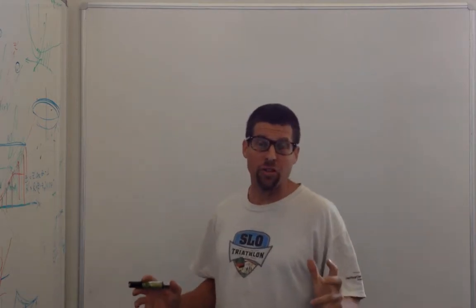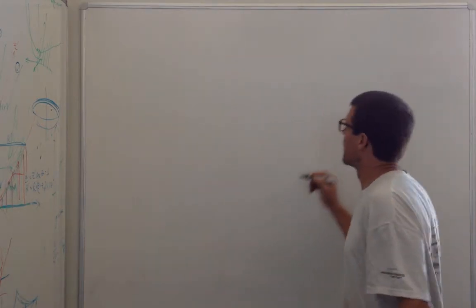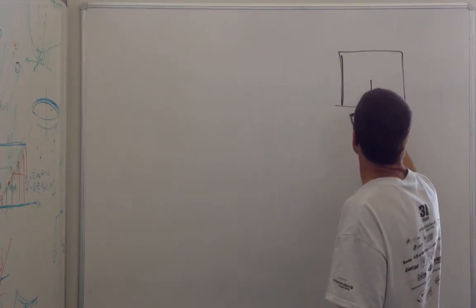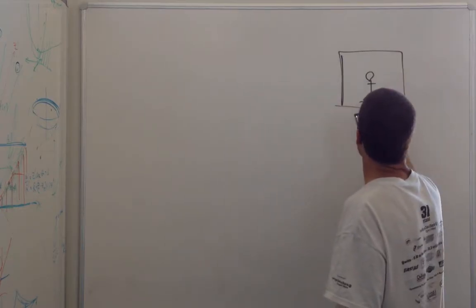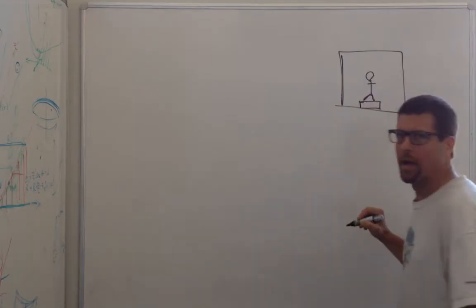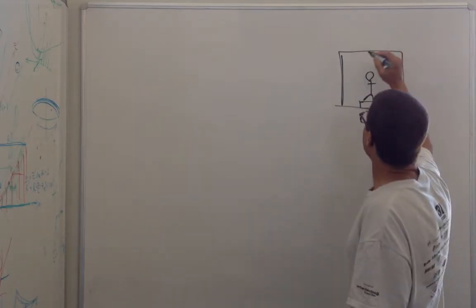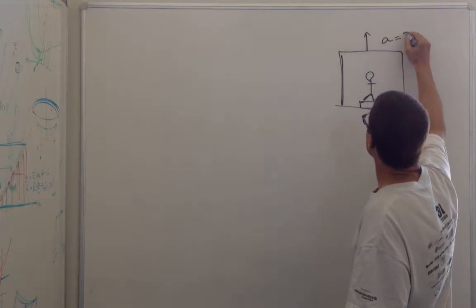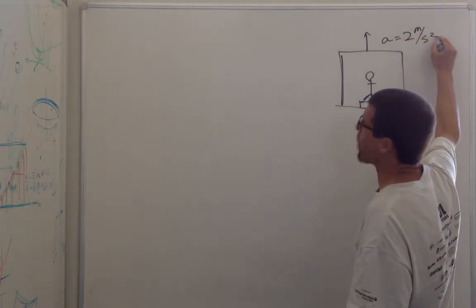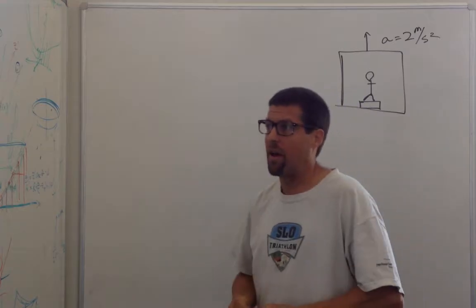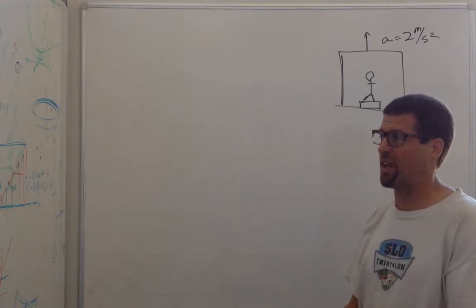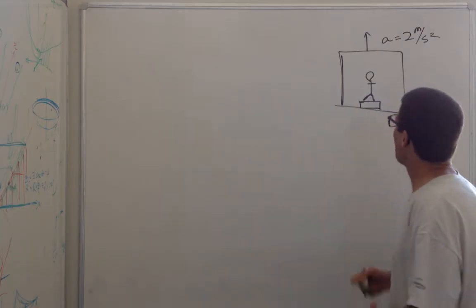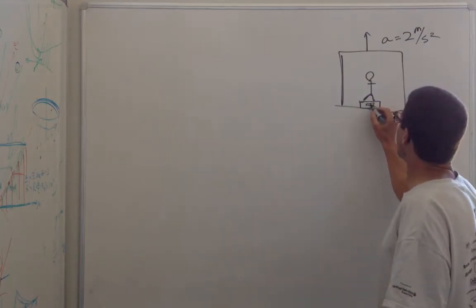Let's solve our first dynamics problem. Imagine you're in an elevator and you're standing on a scale and the elevator is accelerating upwards at two meters per second squared. That means after five seconds you're going 10 meters per second, 22 miles an hour. I want to know what the scale reads right here.